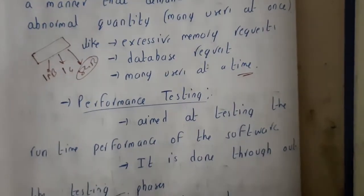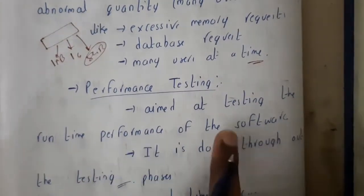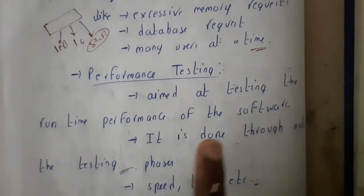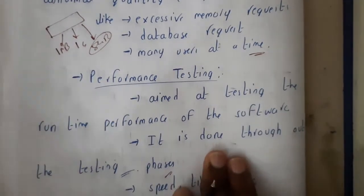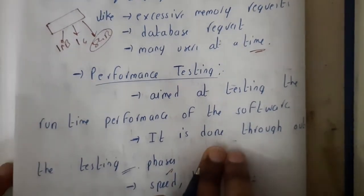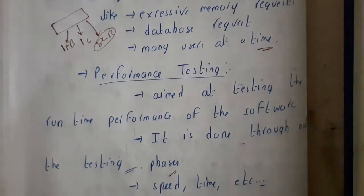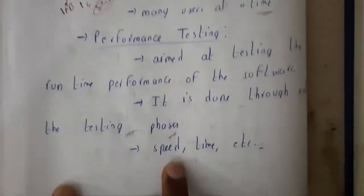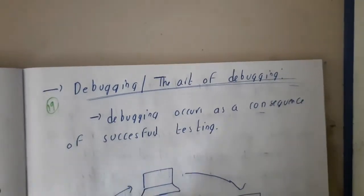Similarly, performance testing aims to assess how the software performs. It is done throughout the system phase — in every phase of the SDLC, you check how your project is performing. Performance testing mostly focuses on speed and time.